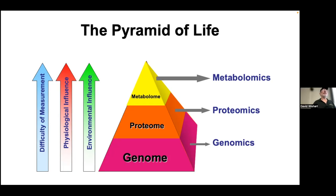There's also a range in difficulty of measurement. It's pretty easy to routinely sequence the entire genome now — we can sequence you for less than a couple of hundred dollars, covering 3 billion base pairs, because there are just four bases to worry about. To completely characterize the metabolome of a person still isn't possible, because there are literally thousands of different chemical species and hundreds of thousands of different chemicals. The pyramid of life is something to consider as we talk about metabolomics.